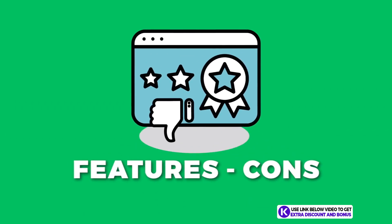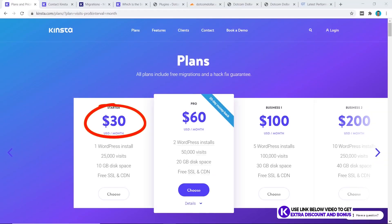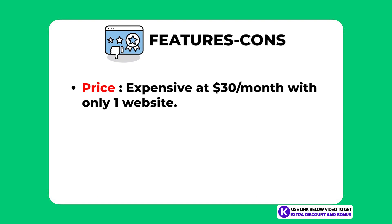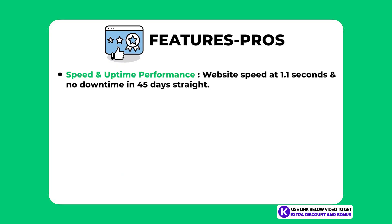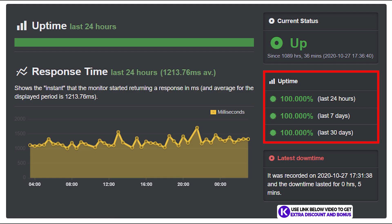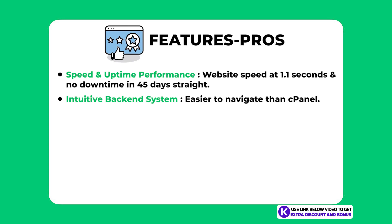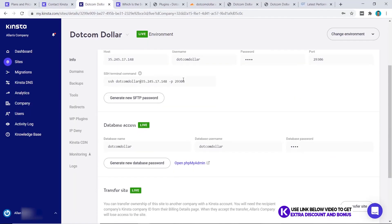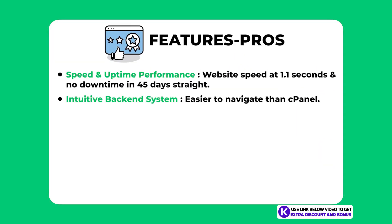Features and cons — I only have one con for Kinsta and that is their price: starting at $30 per month for only one website and 25,000 traffic limit per month is quite expensive. I do think their performance justifies it though as their speed is elite. Pros — the first pro that stands out is Kinsta's speed and uptime performance, with amazing website speed and 45 days straight of no downtime. They are a very reliable hosting provider. The second pro is their intuitive backend system which is much easier to navigate than cPanel — a big plus for beginners.